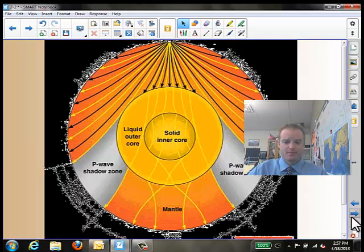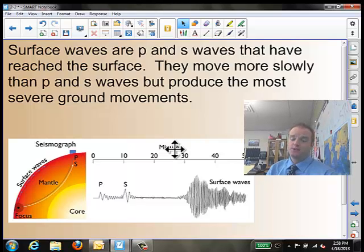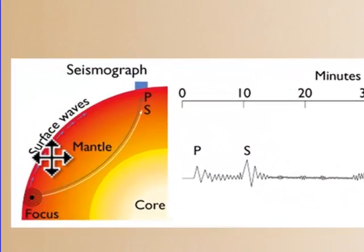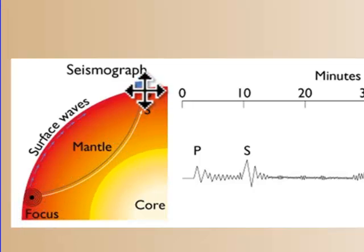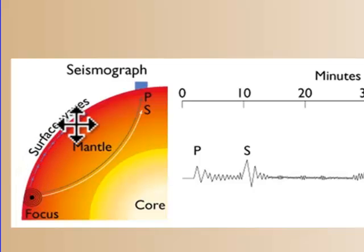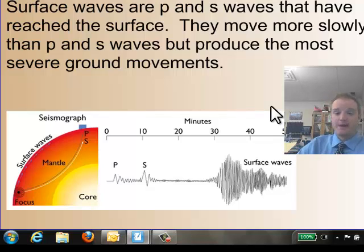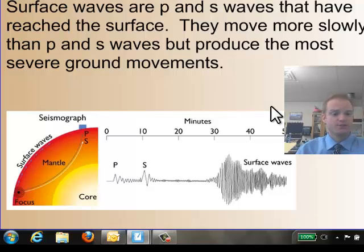Finally, we have surface waves. Surface waves are P and S waves that have reached the surface. They move more slowly than P and S waves, but they tend to produce the most severe ground movements. You can see in this picture here we have P and S waves traveling through, down to the crust, into the mantle, over to that seismograph station where everyone's going to read that earthquake. But there are also waves traveling along the surface of the earth — these combined P and S waves. They tend to ripple the ground. I always go back to gym class when you bring out the parachute and play the popcorn game — that's what the ground does if the surface waves ripple through it.